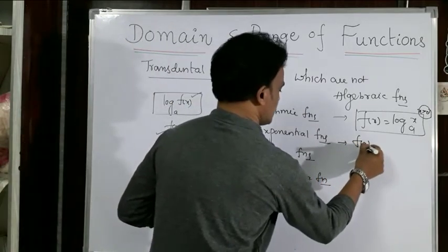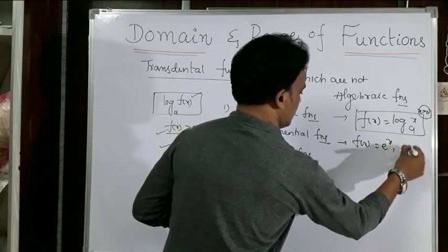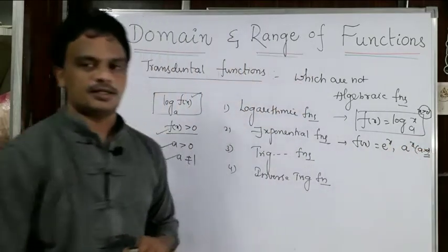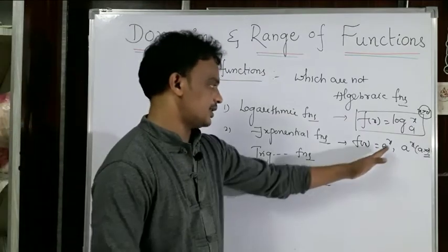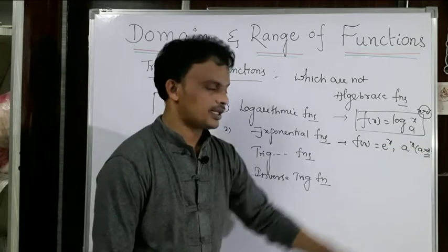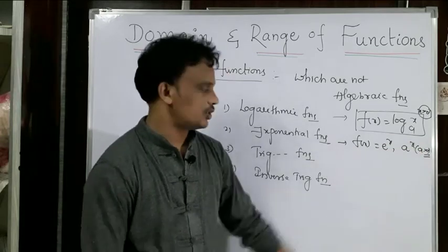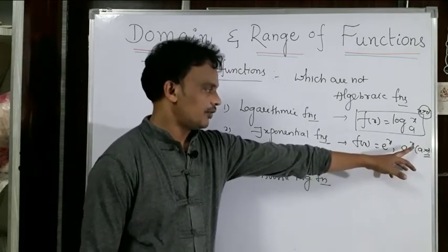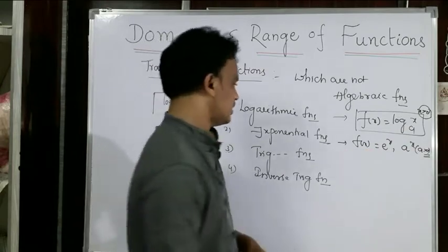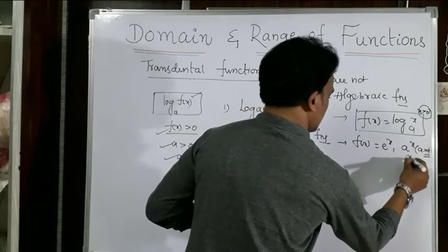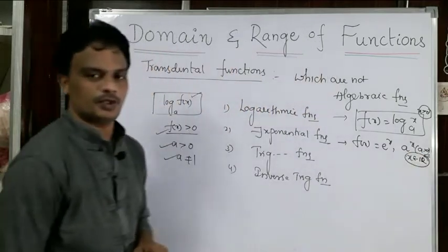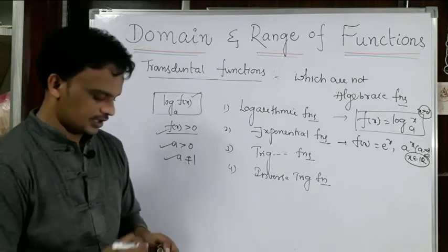For the exponential function f(x) = eˣ or aˣ where a > 0: for any value of x, when a > 0, the function can be defined — there is no problem. So for exponential functions, the domain is x belongs to all real numbers.